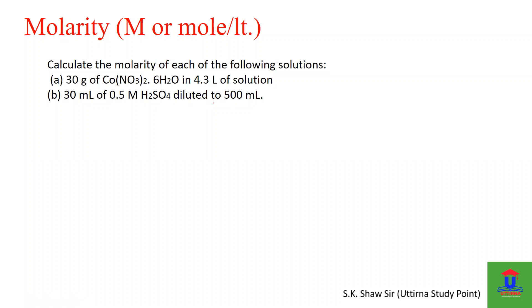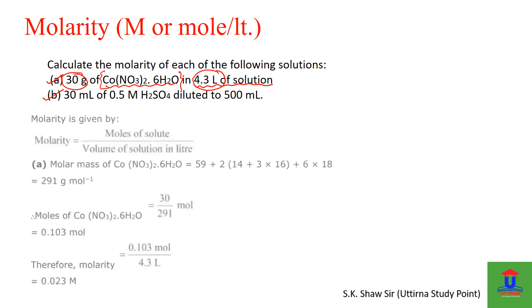Calculate the molarity of each of the following solutions. You have two questions. So 30 grams of Co(NO3)2·6H2O, this is your solute, in this is the volume of solution. So you have a weight, you have volume, what you need to know is the molecular mass of this particular compound. This is the way how to solve this question.